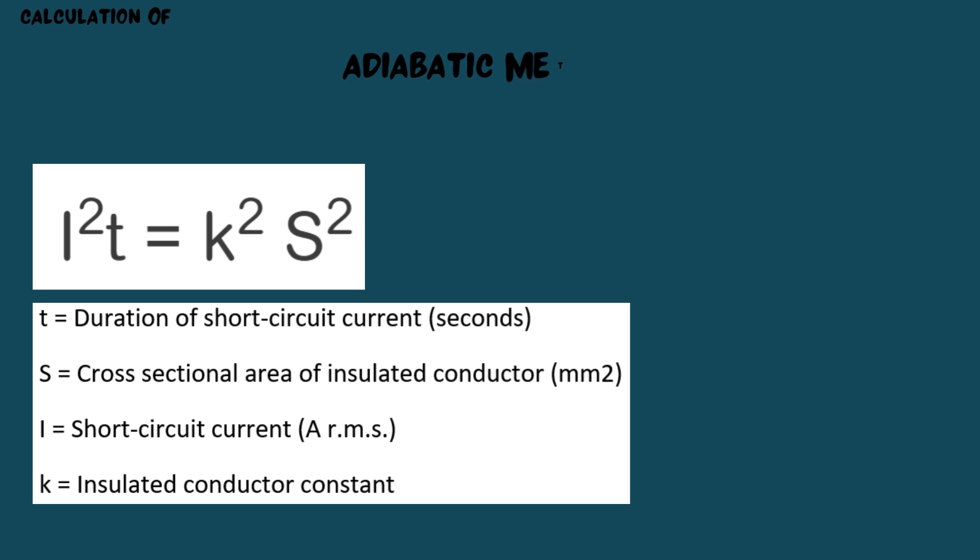The adiabatic equation shown is used to calculate the minimum cross-section of the cable during a short-circuit. T represents the duration of short-circuit current in seconds. S represents the cross-section area of the insulated conductor in square millimeters. I represents the short-circuit current, and K represents the insulated conductor constant.